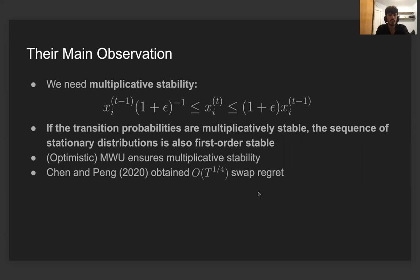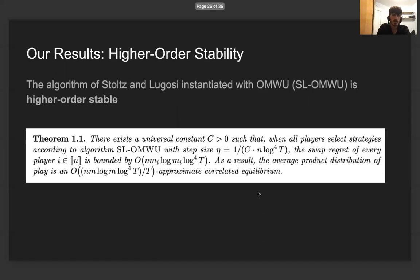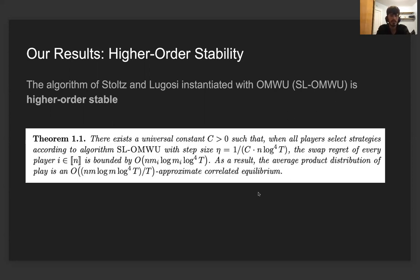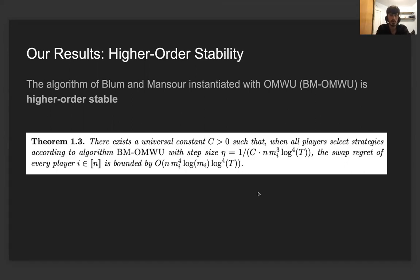The main contribution of our work is to obtain exponential improvements over those guarantees, achieving near-optimal swap regret. In particular, we analyze the algorithm of Stoltz and Lugosi instantiated using optimistic multiplicative weights. One of our main results is that this algorithm is not only first-order stable but higher-order stable, leading to the central theorem implying near-optimal swap regret in general games. Furthermore, using different techniques, we also show that the algorithm of Blum and Mansour, again instantiated using optimistic multiplicative weights, is also higher-order stable, implying near-optimal swap regret.